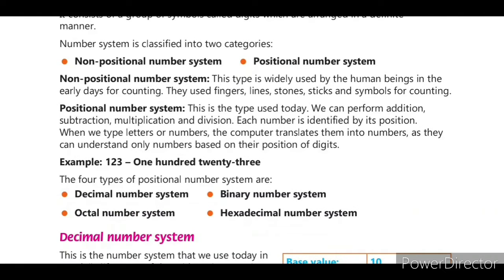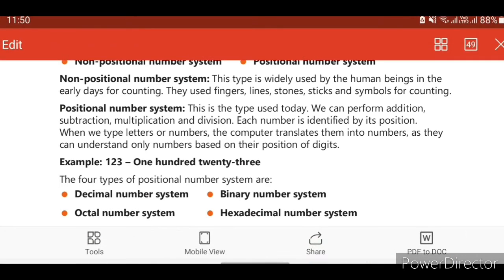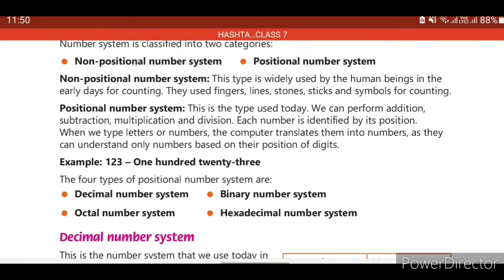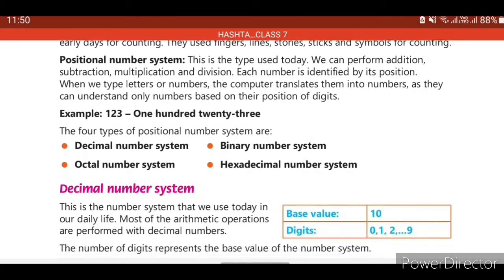We have seen the four types of positional number system: decimal number system, binary number system, octal number system, and hexadecimal number system.